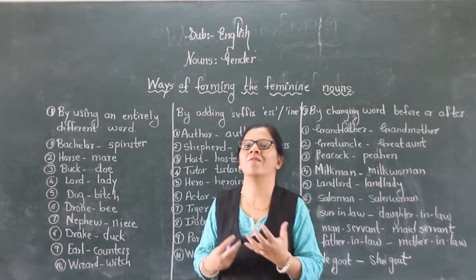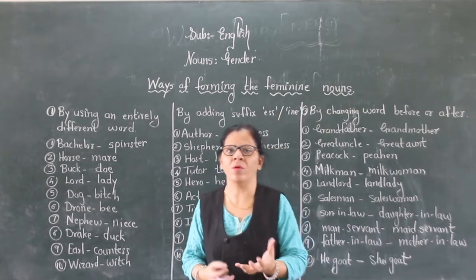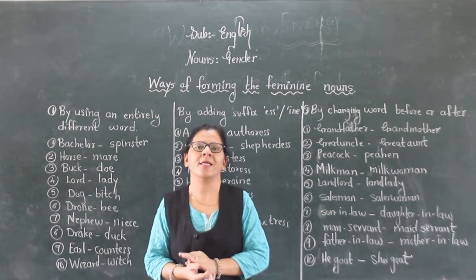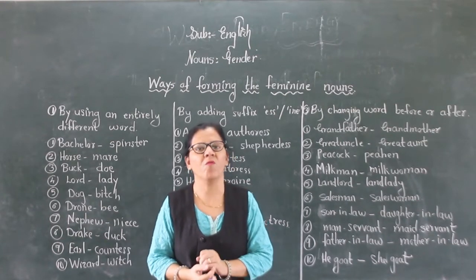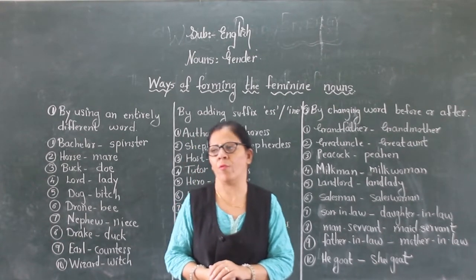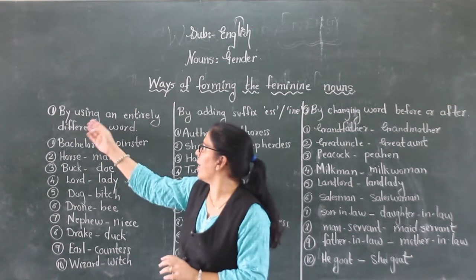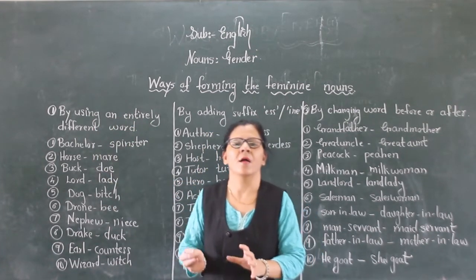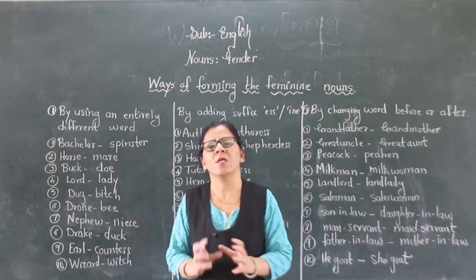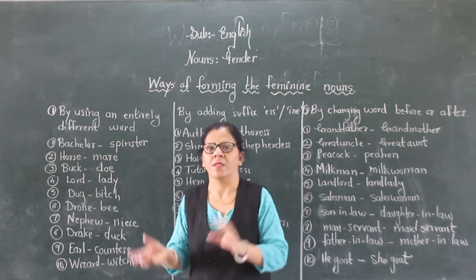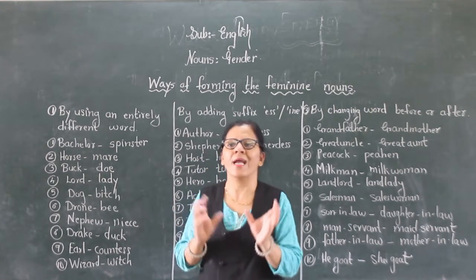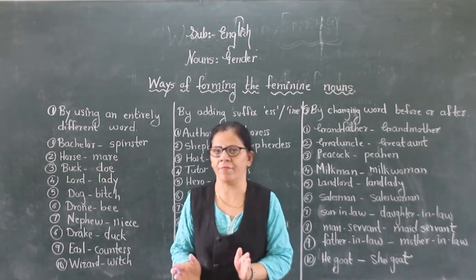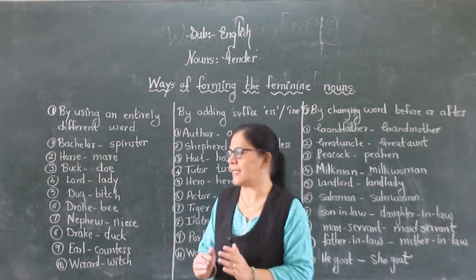Means how to form a feminine noun from the masculine noun. Basically there are three ways of forming a feminine noun. So first is by using an entirely different word — meaning we use a totally different word; the male and female words don't match at all, they are totally different. So let us see examples.